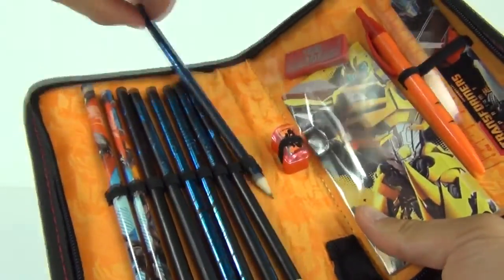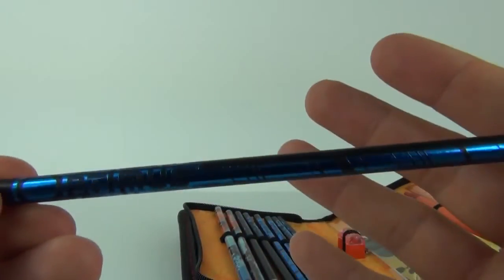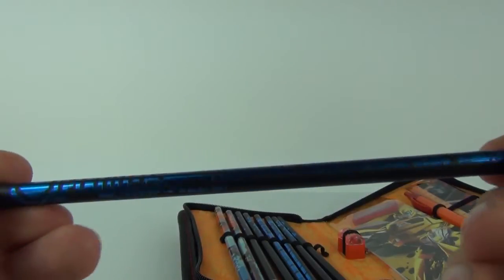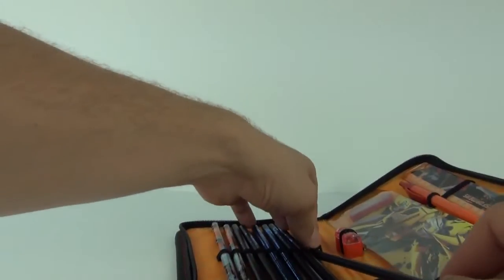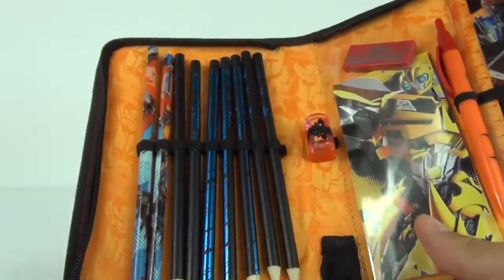But the nicest feature of these crayons is that really cool shiny blue finish there, the print with Optimus Prime in black and blue. Those do look really cool and that will, I'm sure, stand out in your classroom if you are using these.